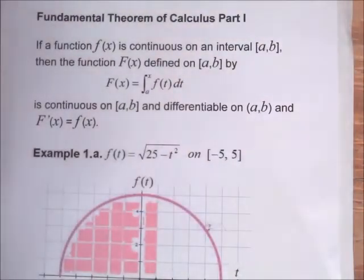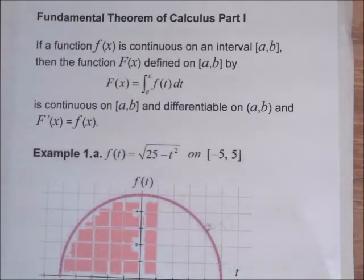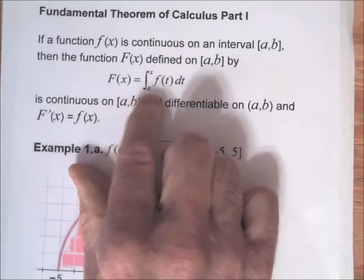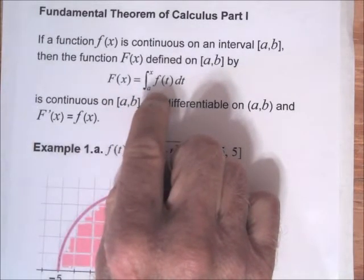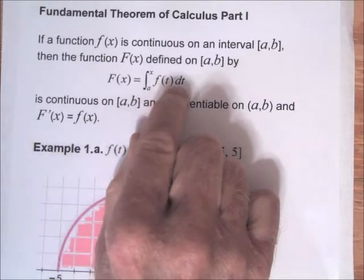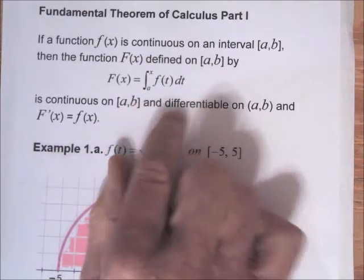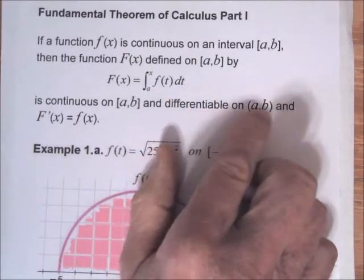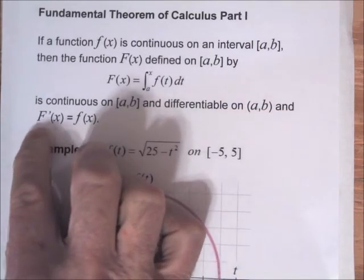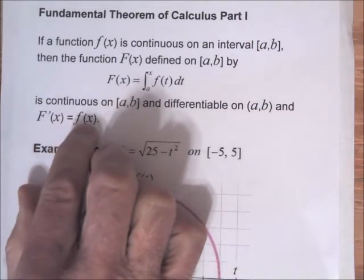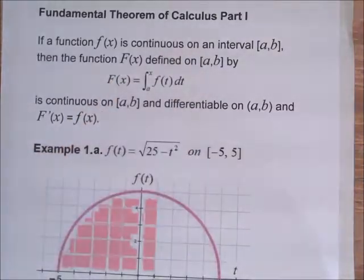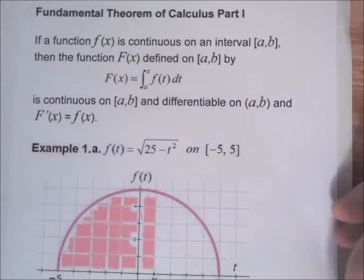Fundamental Theorem of Calculus Part 1. If a function f of x is continuous on the closed interval a to b, then the function capital F of x defined on a to b by capital F of x equal to the integral from a to x of f of t dt is continuous on a to b and differentiable on the open interval a to b, and F prime of x is equal to little f of x. So this gives us a formula for finding the antiderivative.